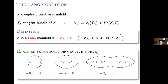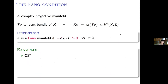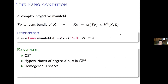In higher dimensions, in general the sign of the canonical class is not well defined — intersecting with different curves C may give positive, zero, or negative numbers. But for some varieties this number is well defined, for instance complex projective space, and we will look at more examples soon, such as hypersurfaces of small degree in projective space. Another important class is homogeneous spaces, and moduli spaces, for instance moduli spaces of vector bundles.